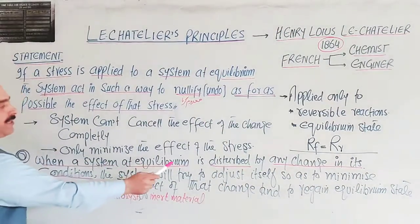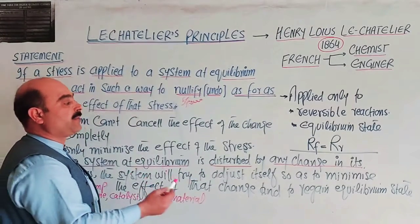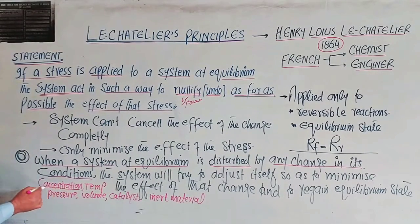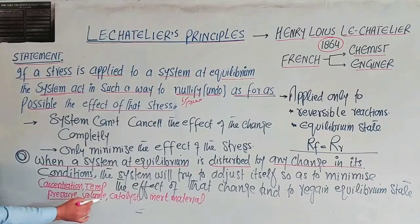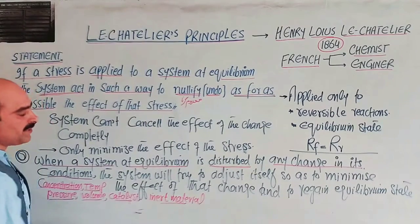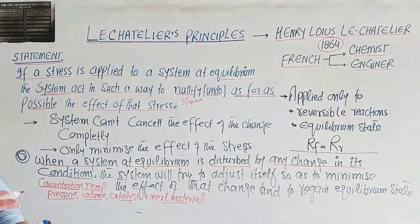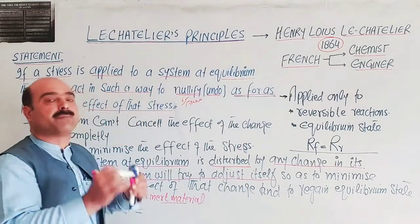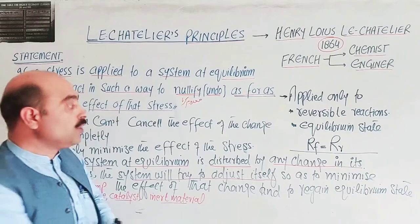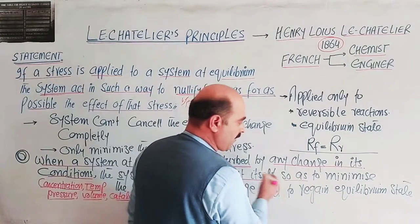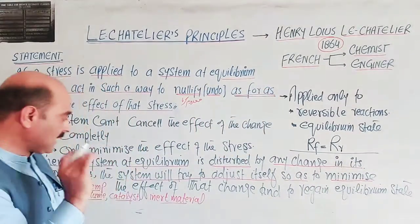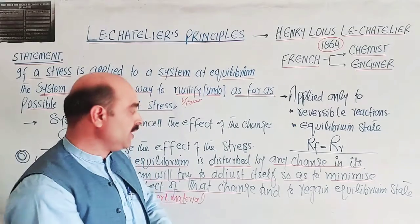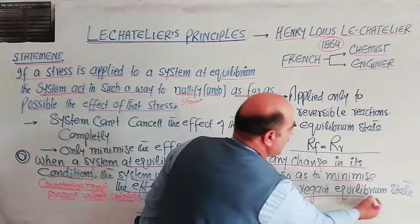When a system at equilibrium is disturbed by any change in its physical conditions — such as concentration, temperature, pressure, volume, catalysts, or added material — the system will try to adjust itself so as to minimize the effect of that change and to regain the equilibrium state.